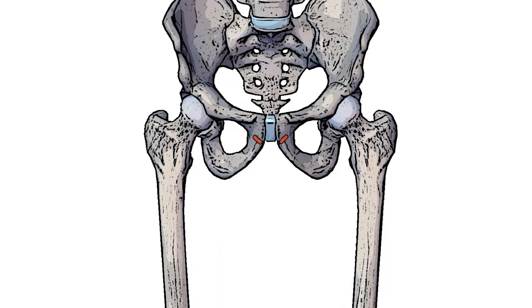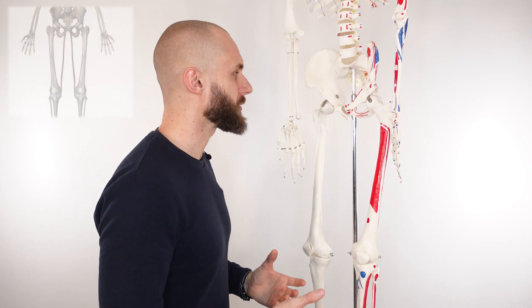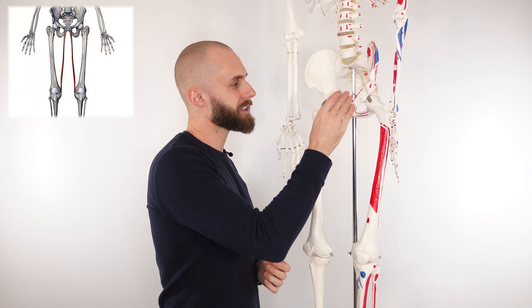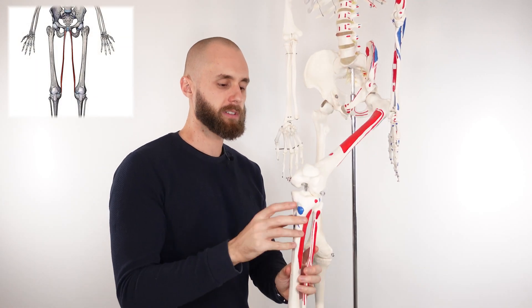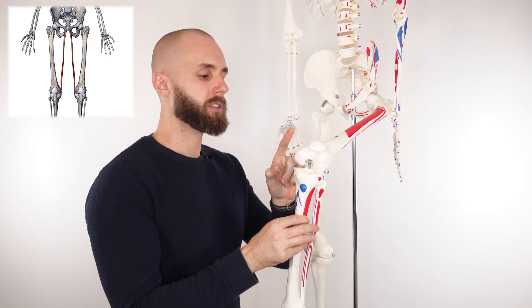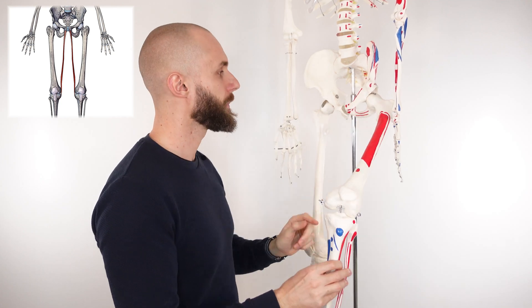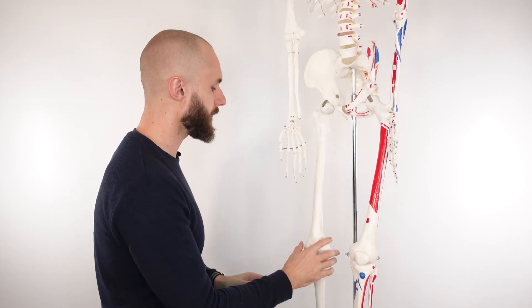You can see highlighted here in red the origin of the gracilis muscle, and that's on the pelvis, specifically on the ischiopubic ramus. Now let's take a look at the actions of the gracilis muscle. The gracilis connects the hip joint to the tibia, so it's going to have actions at both of these joints — it's going to have actions at the knee and at the hip. We'll go over the actions of the hip first.